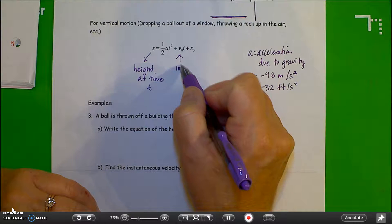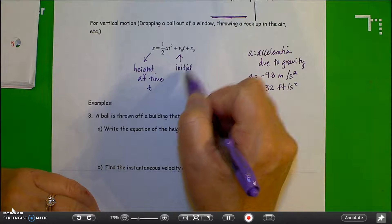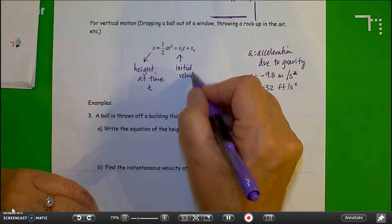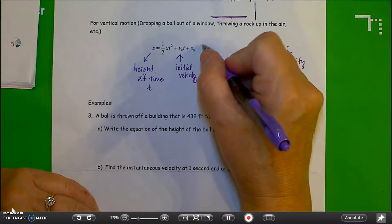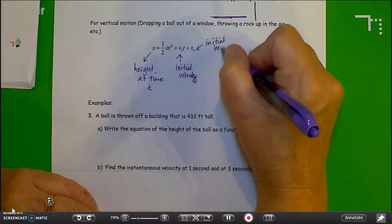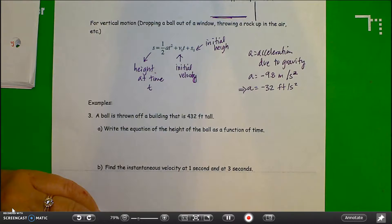V sub zero is the initial velocity. S sub zero is the initial position, or initial height in this case.